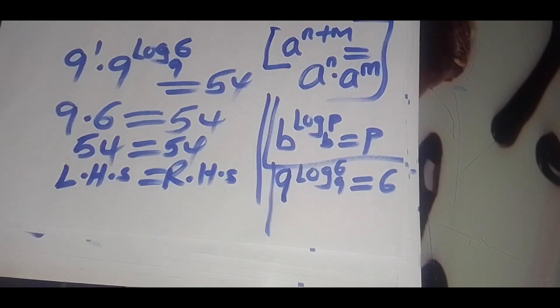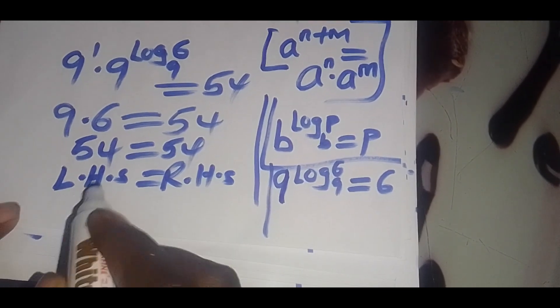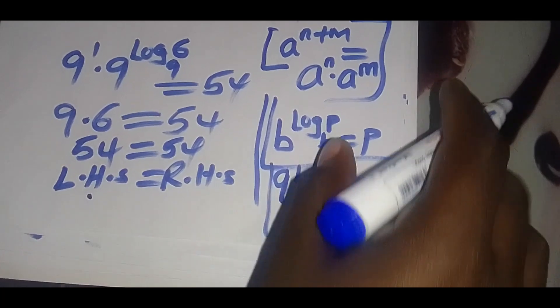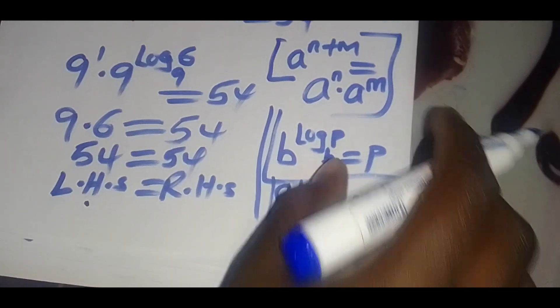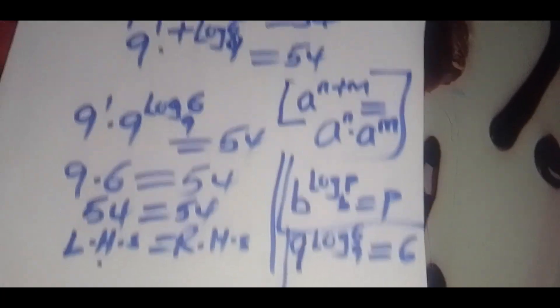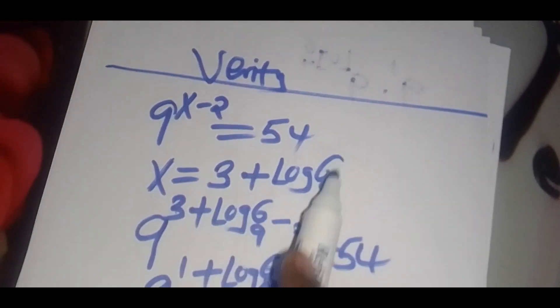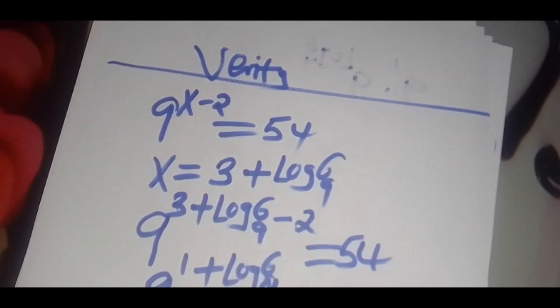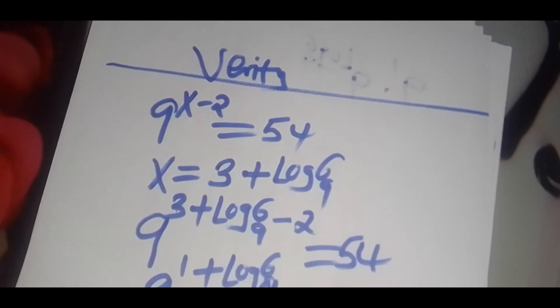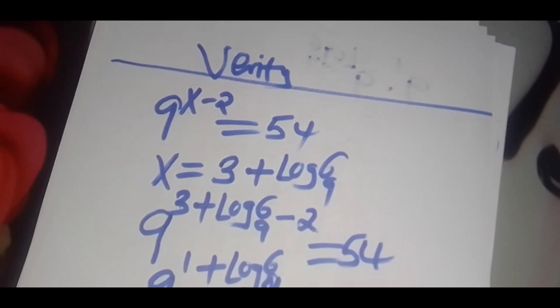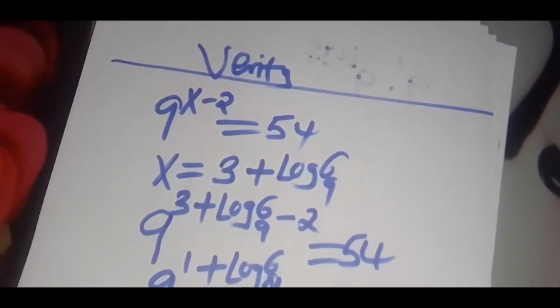And that proves that the value of x, that is 3 plus log 6 to base 9, is the correct value for this exponential equation. Thank you for watching, and kindly subscribe.